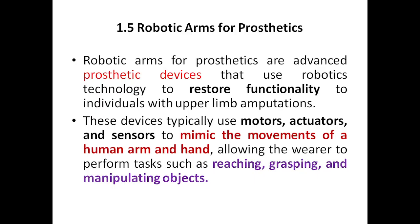Hello everyone, welcome to my YouTube channel. Today we are going to discuss robotic arms for prosthetics. So far we had discussed how exactly particular human organs are working. We started with the brain — how it works as a CPU, the architecture of the brain compared with a CPU, and signal processing happening inside the brain. Today we are going to discuss robotic arms for prosthetics.